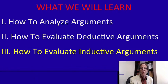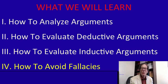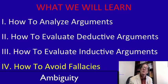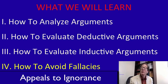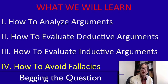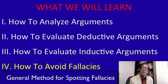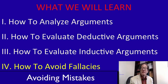Then in part four, we'll look at fallacies — these are common but very tempting ways to make mistakes in arguments. Some of them have to do with vagueness, others with ambiguity. Some are irrelevant, like arguments ad hominem and appeals to ignorance. We'll also look at a major fallacy called begging the question that people commit all the time. And in the end, we'll teach you a general method for spotting and avoiding these common mistakes.